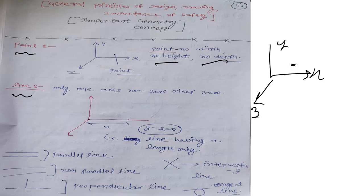But in line cases, one thing may be there — it may be on X axis or on Y axis. Only one thing is not equal to 0 and all other things are 0. So for a point, all dimensions are zero. For a line, two things will be zero and one thing will be increasing. Here we have X not equal to 0 and Y and Z equal to 0 — that means this is a line. This is the main difference between point and line.